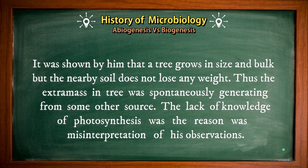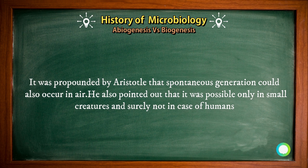Von Helmont showed that a tree grows in size and bulk, but the nearby soil does not lose any weight. Thus, the extra mass in the tree was spontaneously generating from some other source. The lack of knowledge of photosynthesis was the reason for misinterpretations of his observations. Aristotle also propounded that spontaneous generation could occur in air, but only in small creatures and surely not in the case of humans.